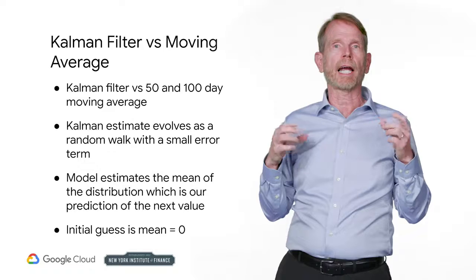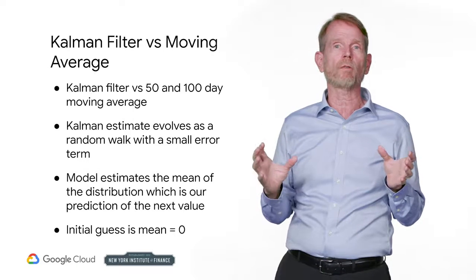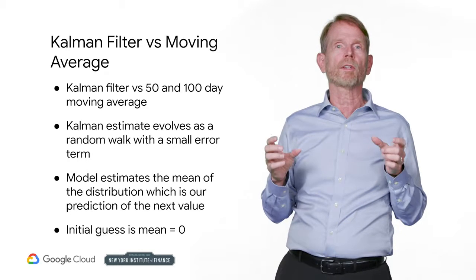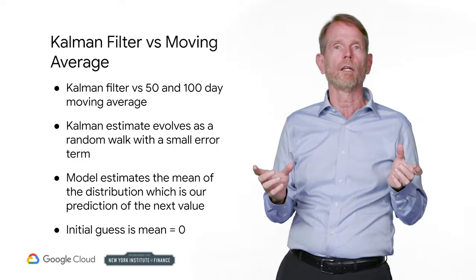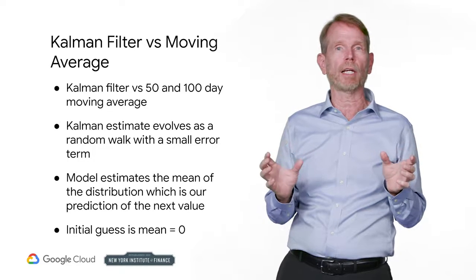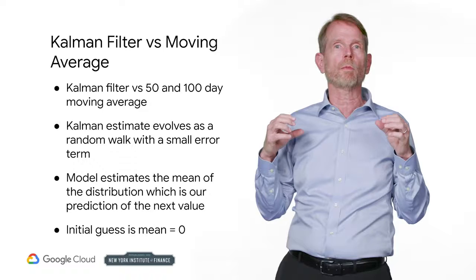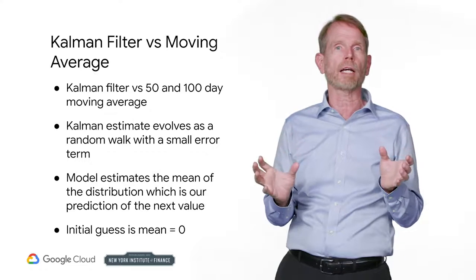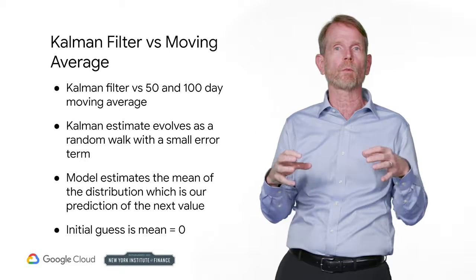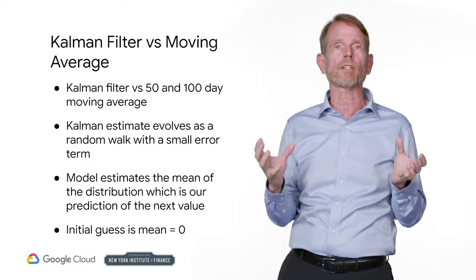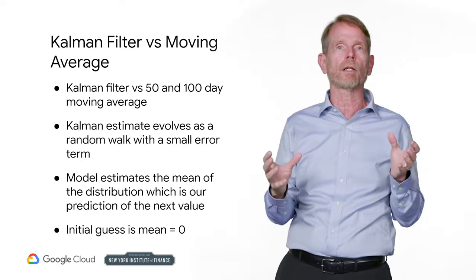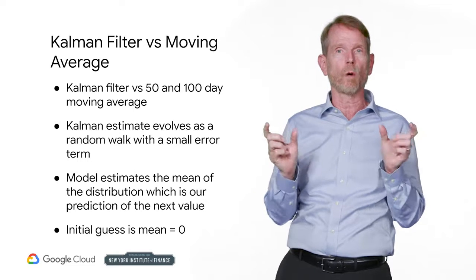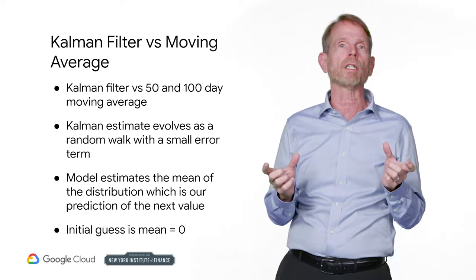We will use both a Kalman filter and a 50 and 100 day moving average to estimate the rolling mean of a data series. We hope that the mean describes our observations well, so it shouldn't change too much when we add an observation. Therefore we assume that it evolves as a random walk with a small error term. The mean is the model's guess for the mean of the distribution from which the measurements are being drawn, so our prediction of the next value is simply equal to our estimate of the mean. We assume that the observations have a variance of one around the rolling mean. Our initial guess for the mean is zero.